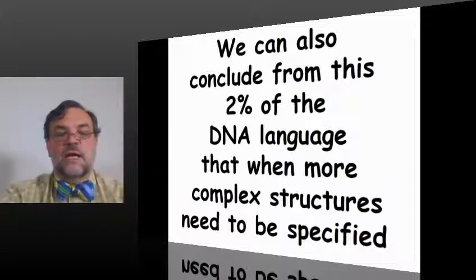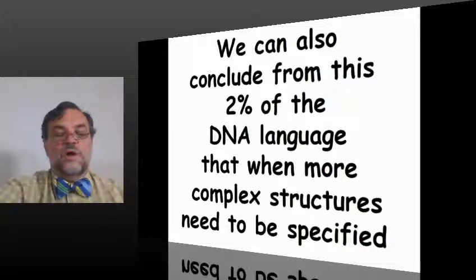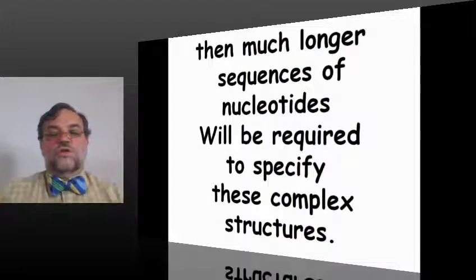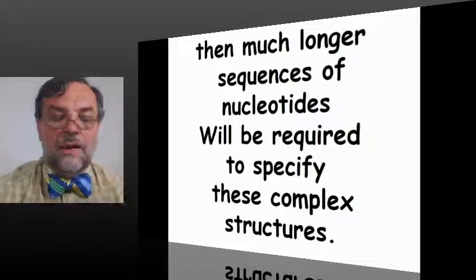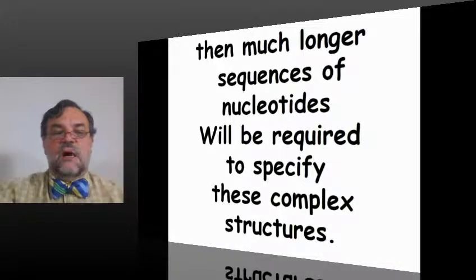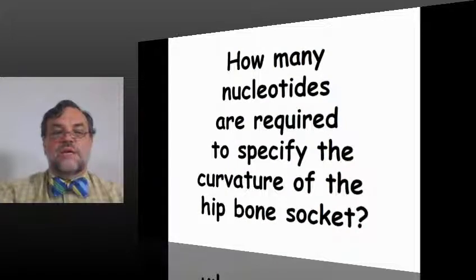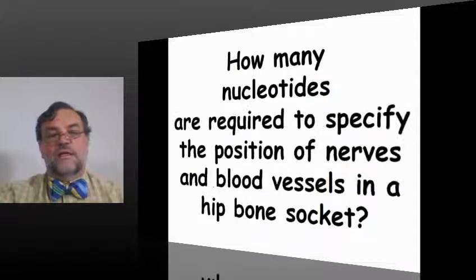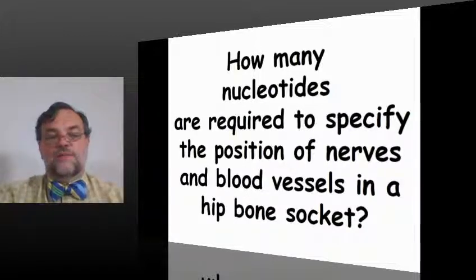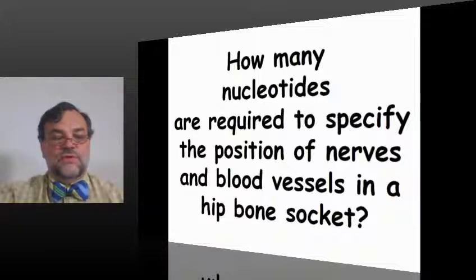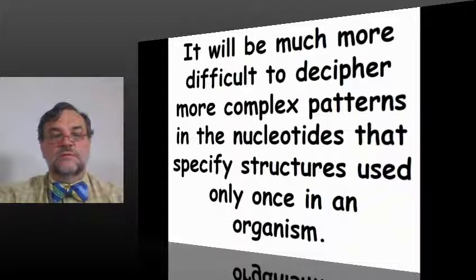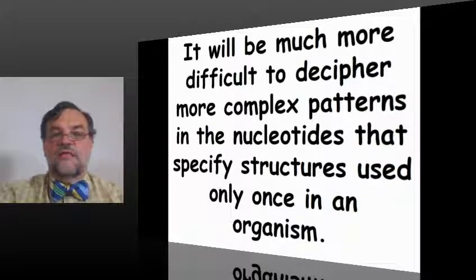A second conclusion: we can also conclude from this 2% of the DNA language that when more complex structures need to be specified, then much longer sequences of nucleotides will be required to specify these complex structures. For example, how many nucleotides are required to specify the curvature of a hip bone socket? How many nucleotides are required to specify the position of nerves and blood vessels in the hip bone socket?